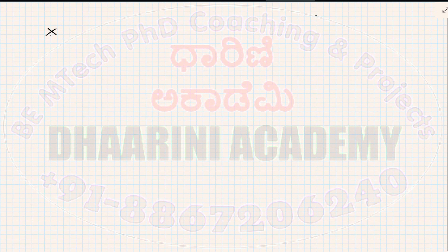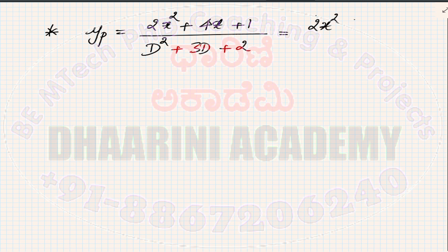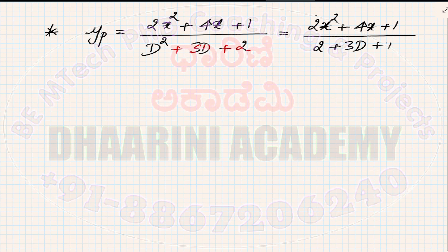Let us take an example. Suppose we have yp as a polynomial: (2x² + 4x + 1) divided by (d² + 3d + 2). In order to perform this, we first write the denominator in increasing order of the power of d. That is, we write (2x² + 4x + 1) divided by (2 + 3d + d²).